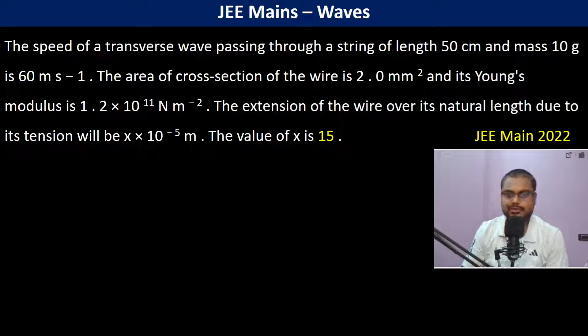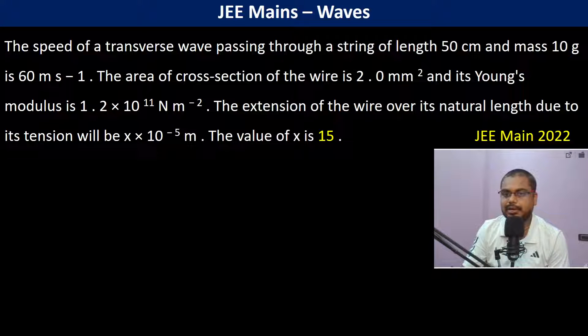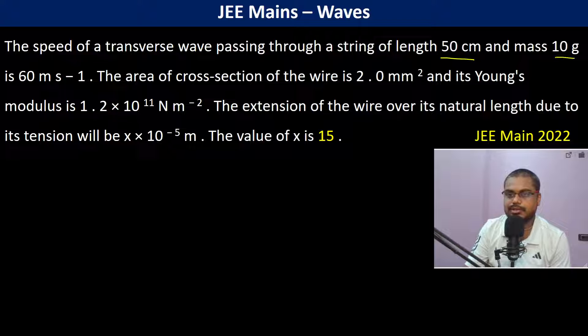The speed of a transverse wave passing through a string of length 50 centimeters and mass 10 grams is 60 meters per second.